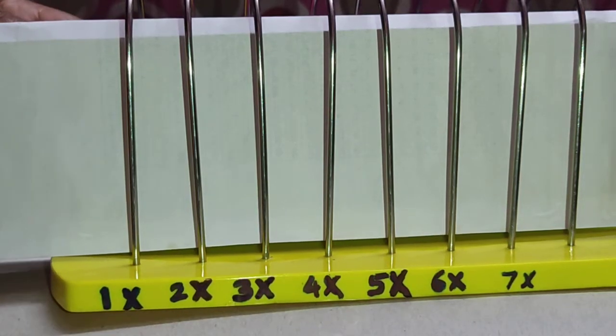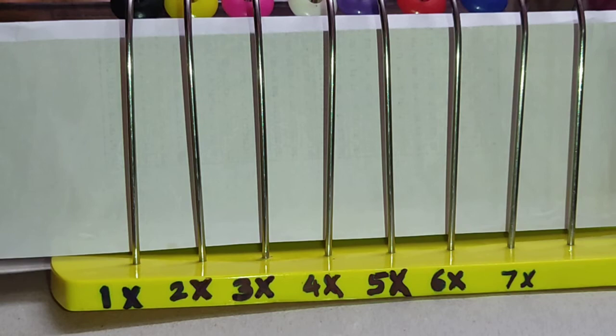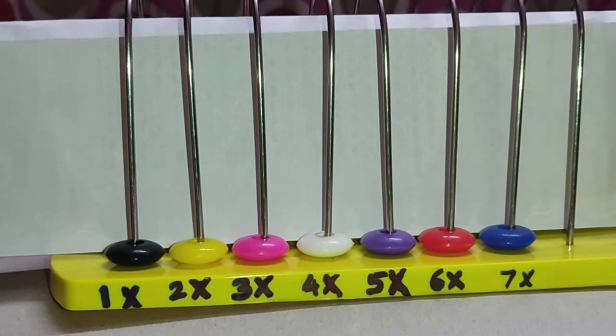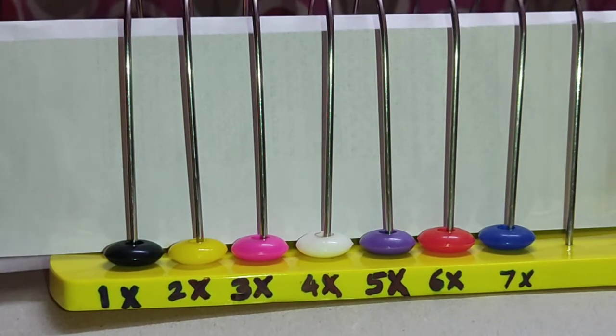Multiplication Tables, Table 7. 7 times 1 is equal to 7.